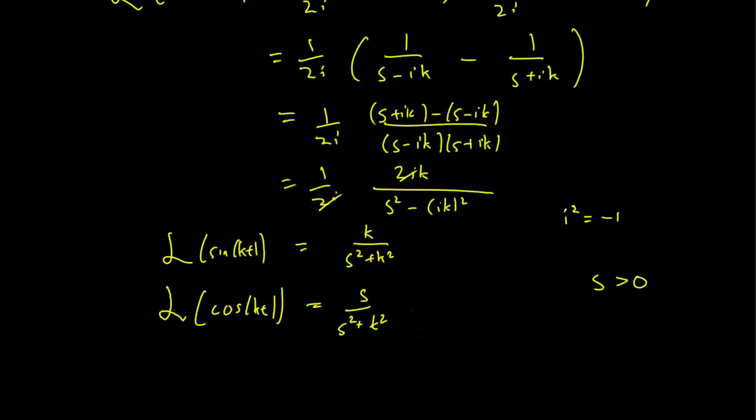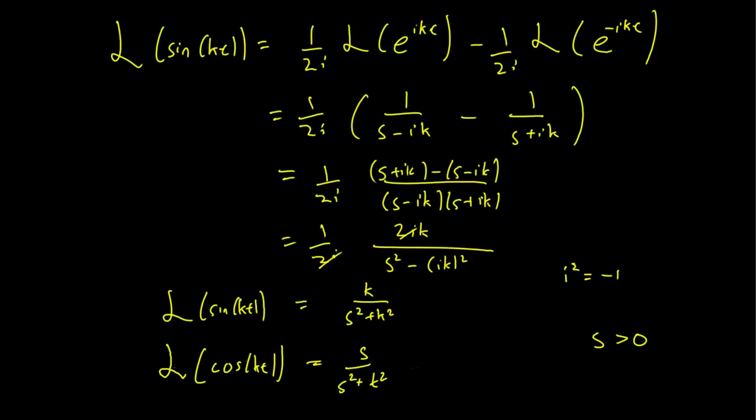So the s greater than 0 restriction actually comes from the fact that we care about the real part of the exponential. So this actually comes from s greater than the real part of ik. But the real part of ik is obviously 0, and that's where we get our s restriction.